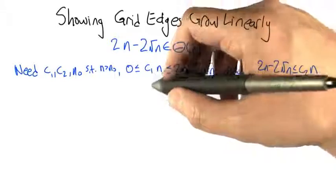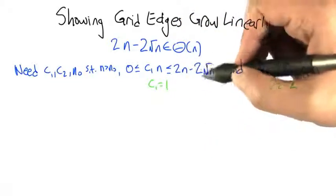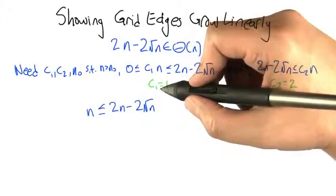What about c1? Well, let's take c1 to be 1. Intuitively, the idea being this function is growing like 2n minus something smaller than that, so n should be underneath of that. But let's just make sure if c1 is equal to 1, then we need n to be less than or equal to this expression.